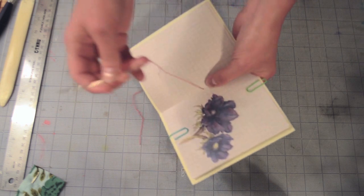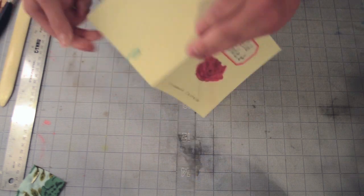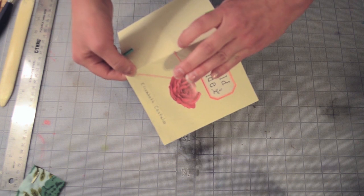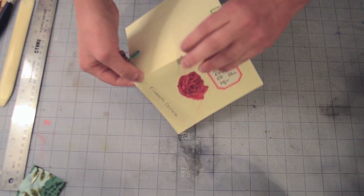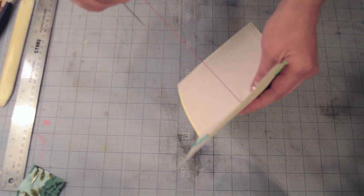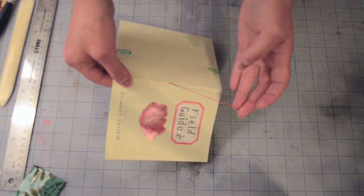So, pull that through, but leave a tail on the outside. Just enough to tie, so like a couple inches.